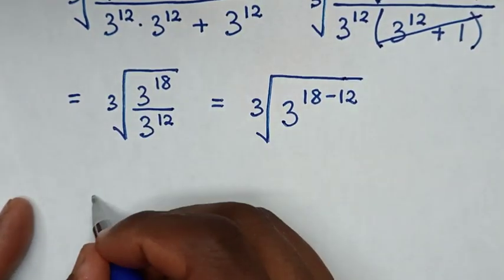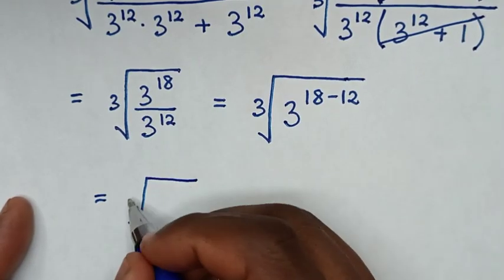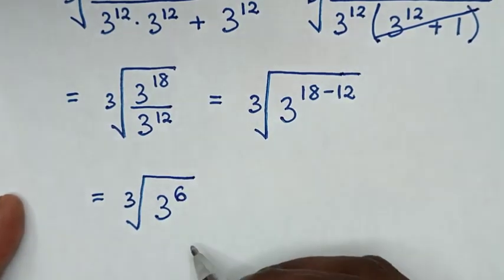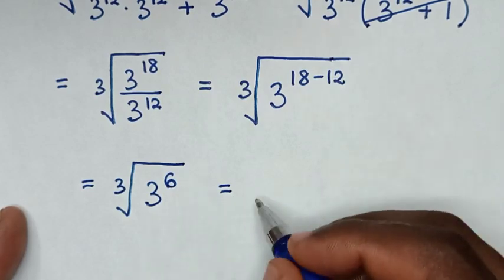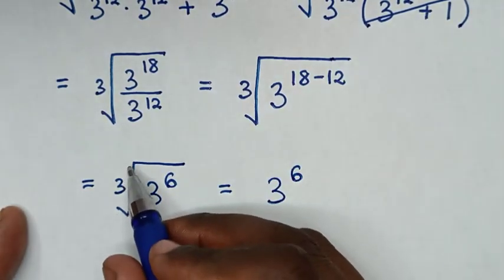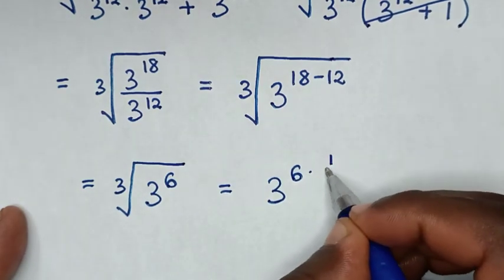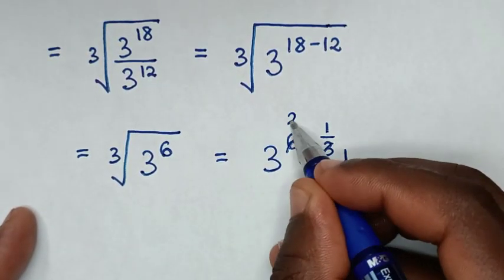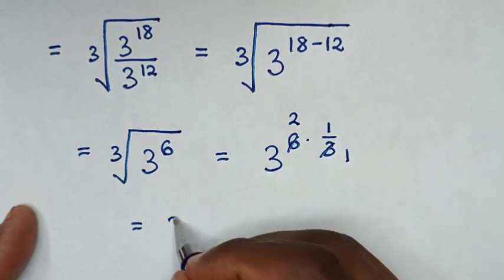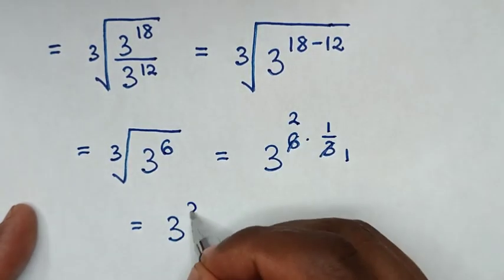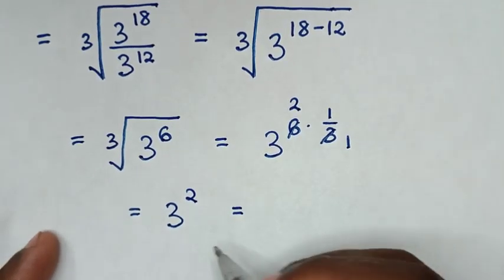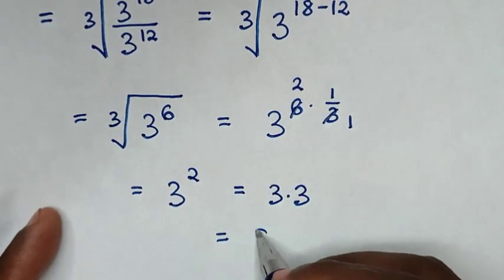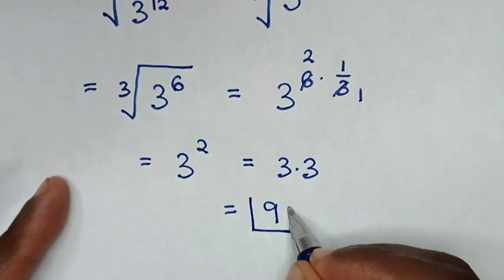That gives 3 power of 6. Then cube root is same as power of 1 over 3, so it will be equal to 3 power of 6 times 1 over 3, which is 3 power of 2. And 3 power of 2 is same as 3 times 3, which is equal to 9. Therefore this is our final answer.